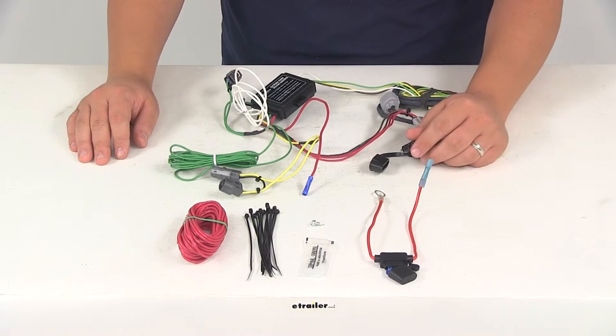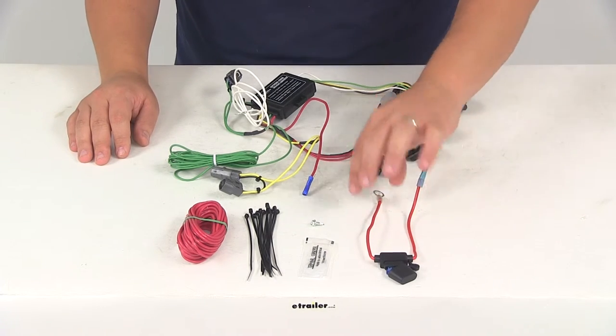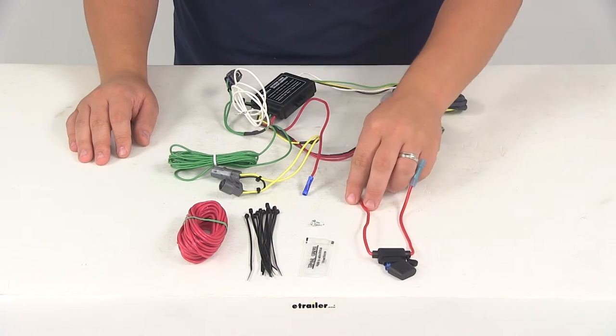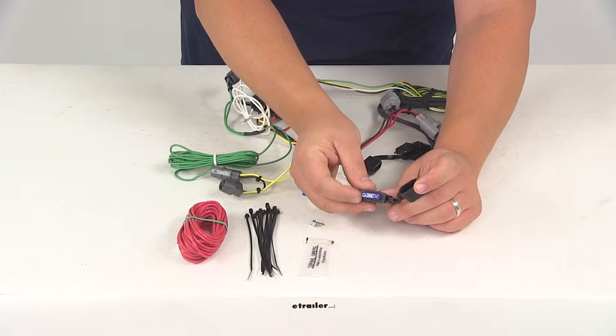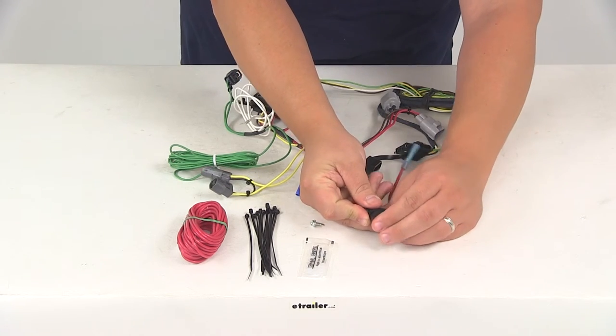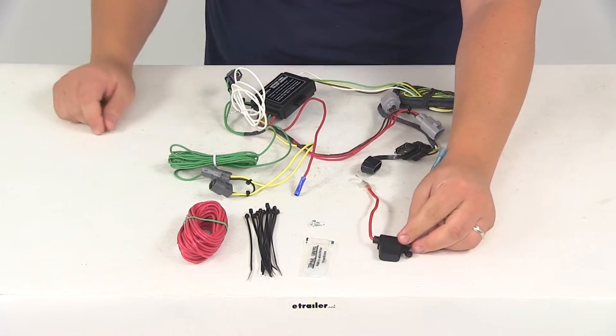It's already got the buck connector on there, and then the other half of the fuse holder has a ring terminal attached to it. That's going to get connected to the positive post on the vehicle battery. It's already going to come with a 15 amp fuse, and it's got the nice little cap that goes over that to secure it.